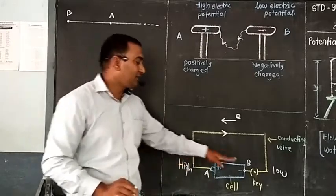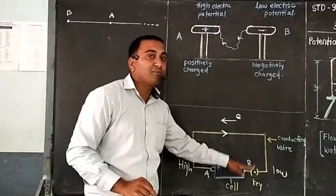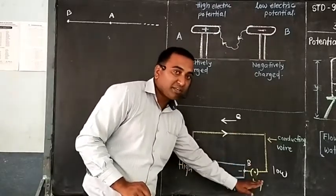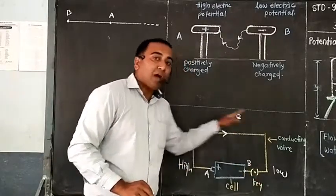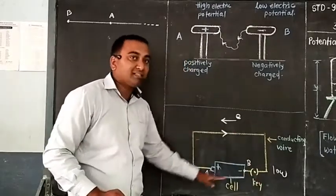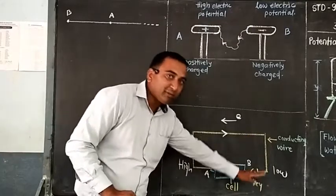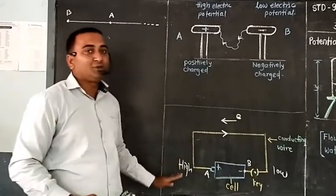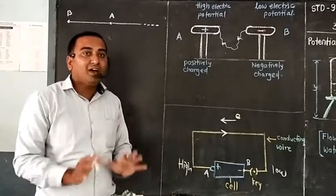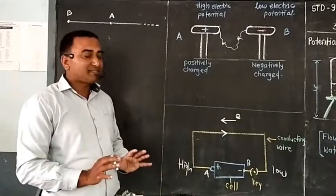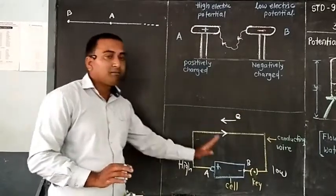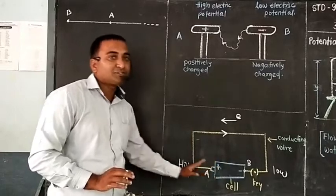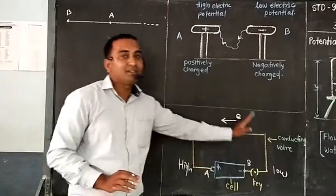Actually, electrons are flowing from lower potential to higher potential — that is, from negative to positive — but we do the representation as conventional current going from positive to negative.